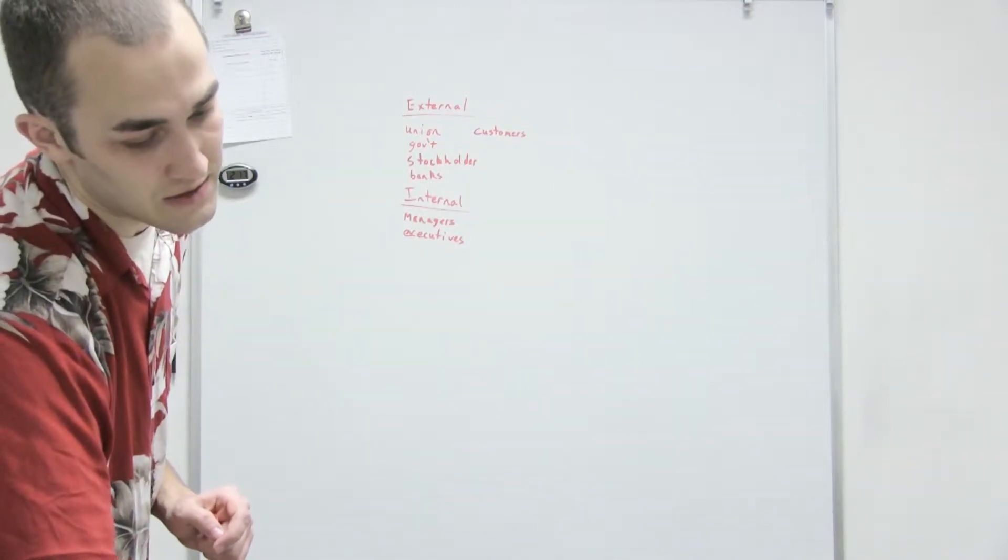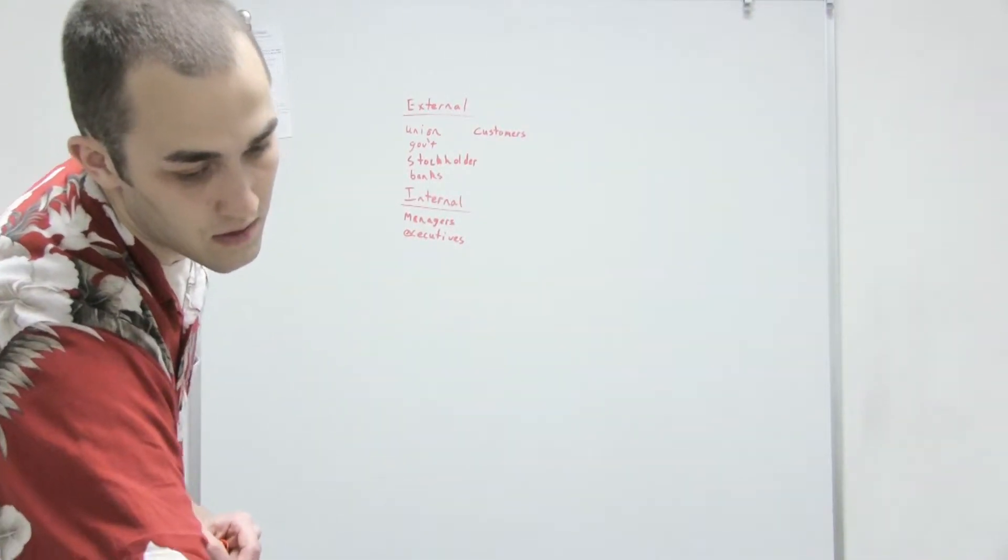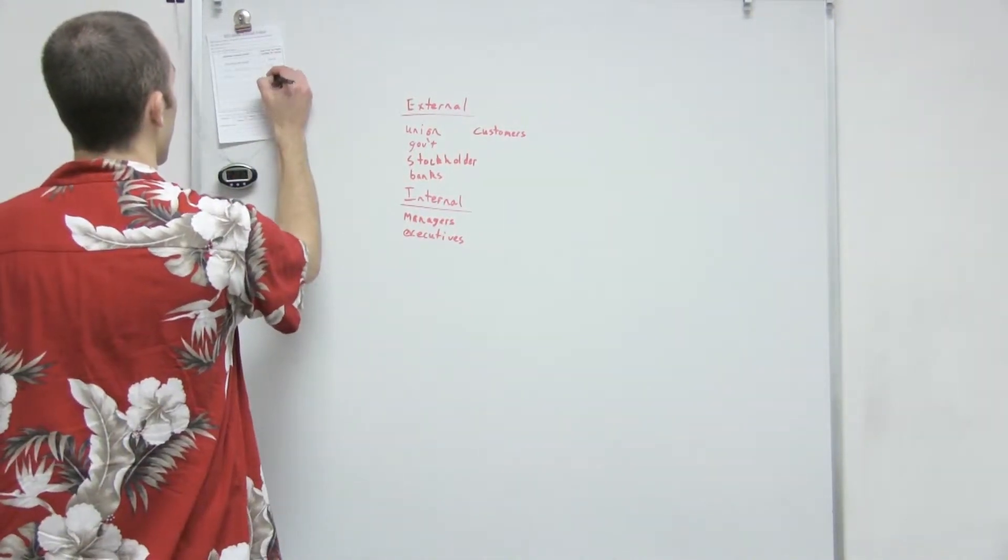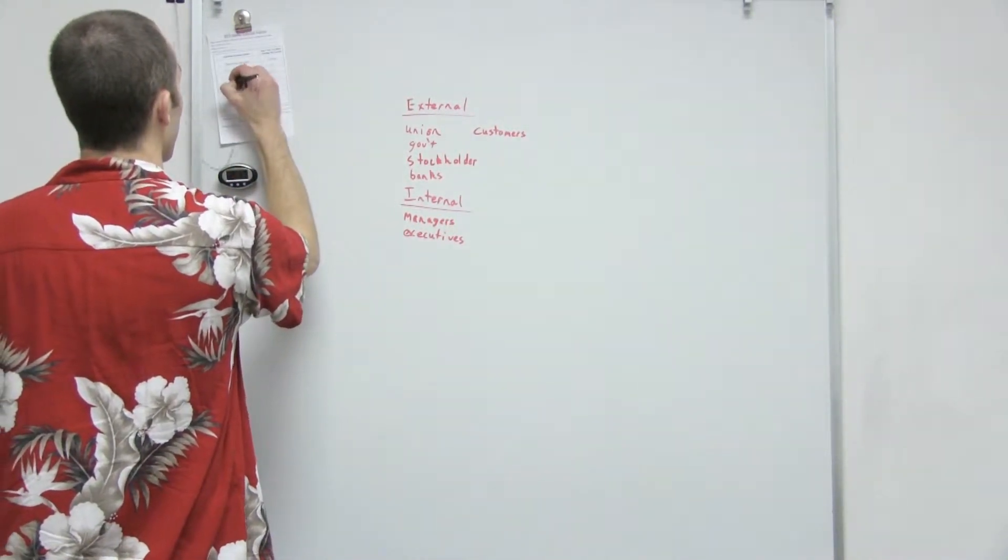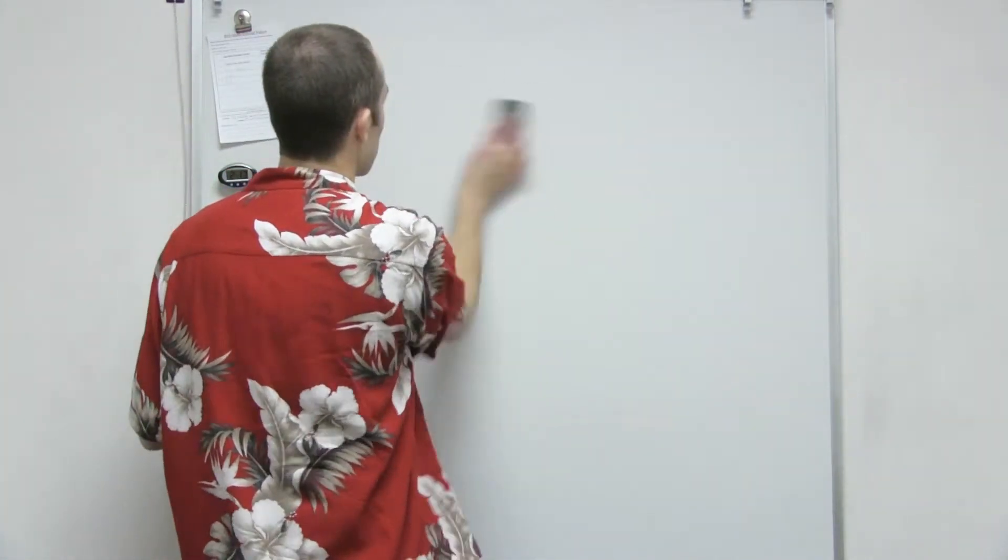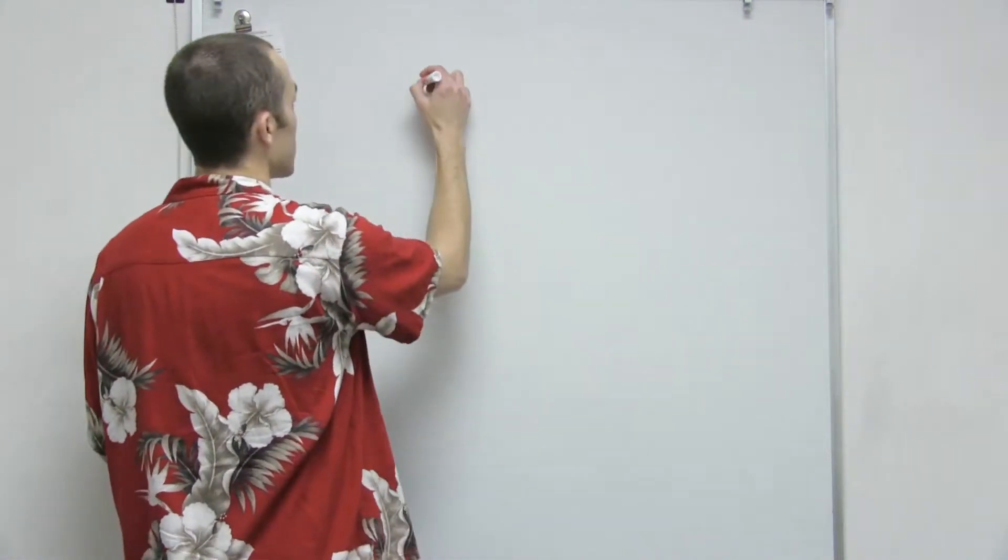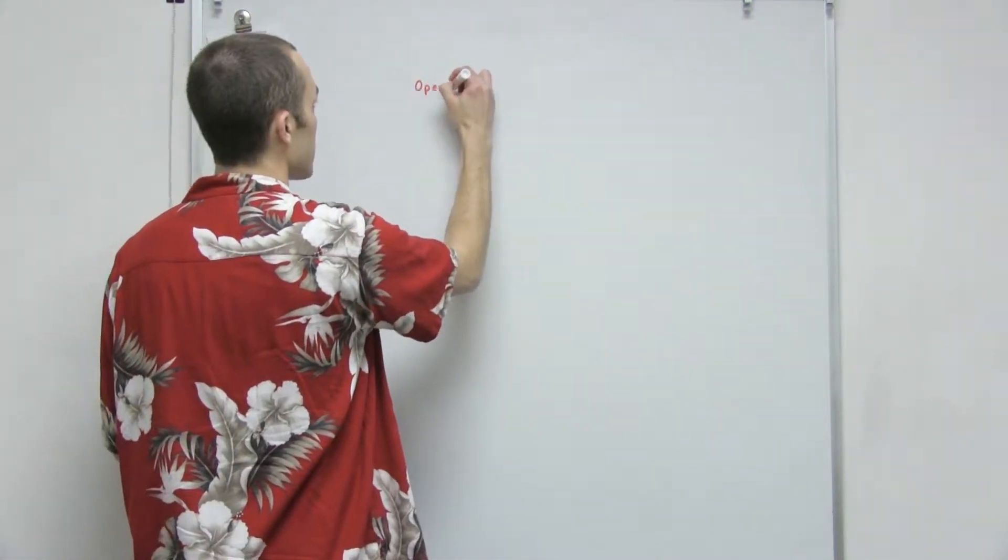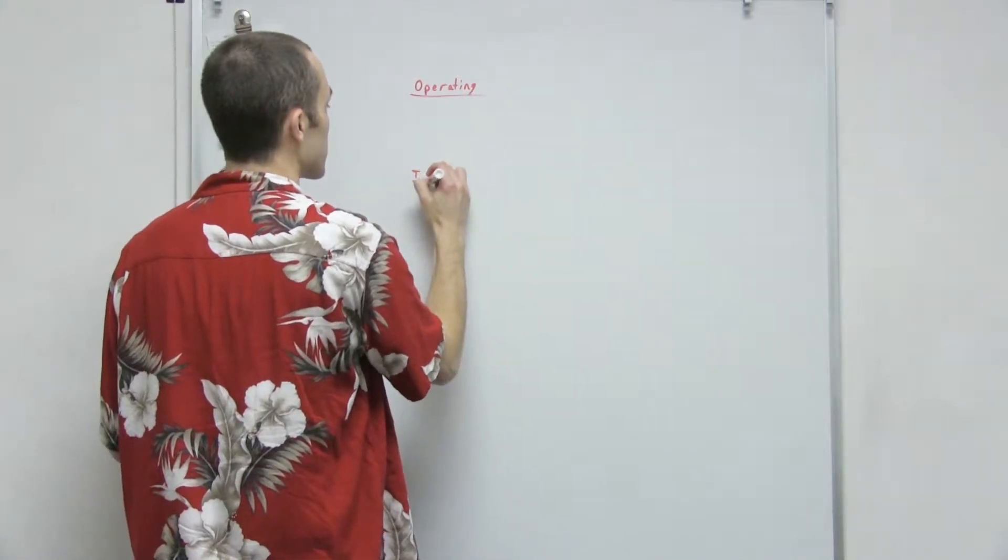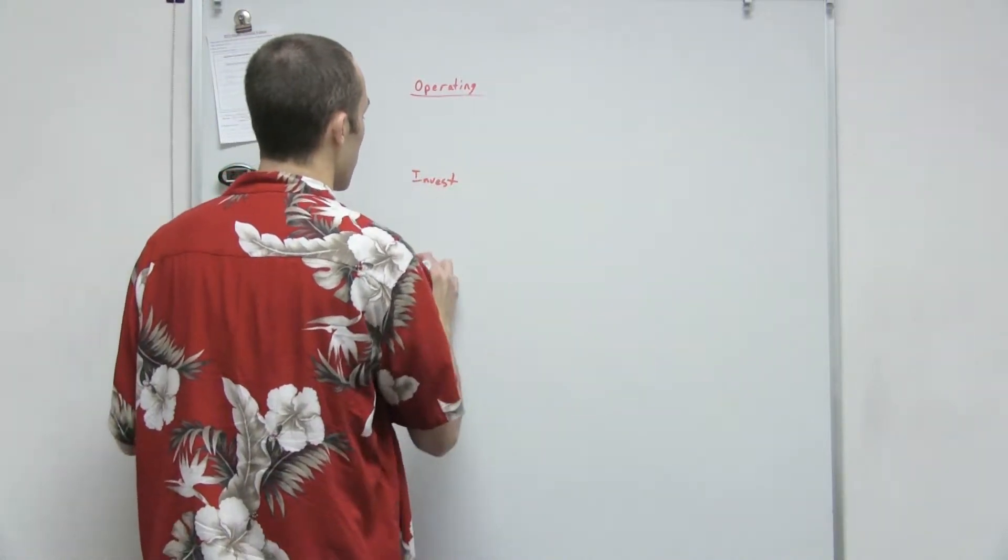The three types of business activities: financing, investing, and operating. So those three types - operating, investing, and finance.